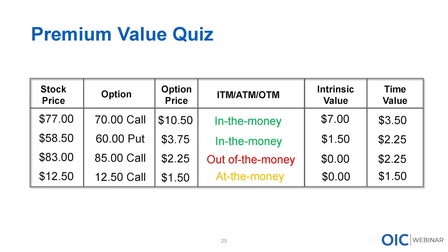Fourth example: $12.50 stock versus a $12.50 call, option price $1.50. With stock and strike both at $12.50, those are at the money. At-the-money contracts have no intrinsic value, and the entire option premium of $1.50 is made up of time value.